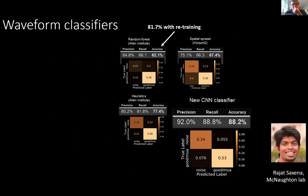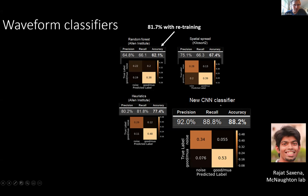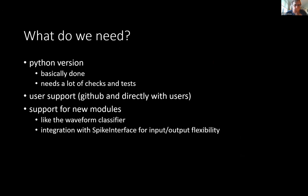Another thing that, again due to lack of support, we can't really do is integrate modules that other people built. For example, Rajat worked a few years ago to develop a post hoc classifier that runs at the end of Kilosort, which tells you whether one of those little wiggles is coming from a neuron or not. It's a really good classifier, but it never made it into Kilosort because you need it to be integrated and we don't really have the modular support that would be needed.